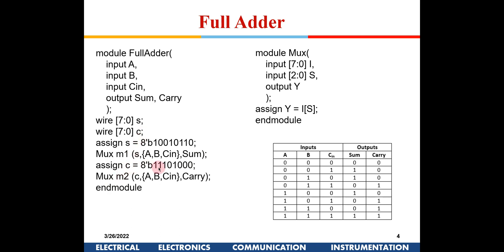Similarly, wire C is assigned 8'b1110_1000, which is the carry truth table with MSB first. A second mux instance named M2 is used for carry. The same order is followed: C as the 8-bit input, ABC as the 3-bit control, and carry as the output. This is how a full adder is implemented using multiplexers.